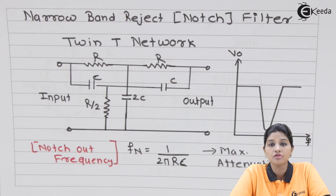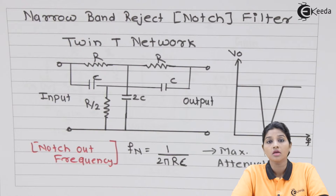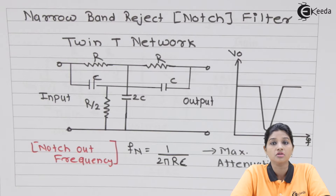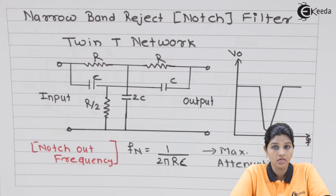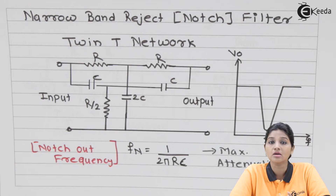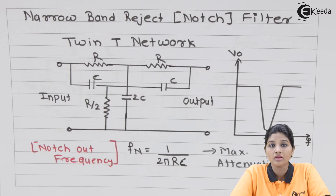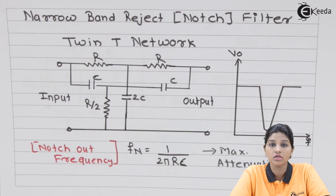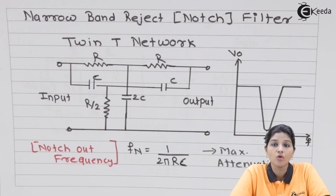As bandwidth is reduced, the frequency response becomes more and more sharper. In case of narrow band reject filter, the value of Q is very much higher — greater than 10 — and therefore the bandwidth is very much smaller compared to a wide band reject filter. Most of the time, the notch filter or narrow band reject filter uses a twin T network.